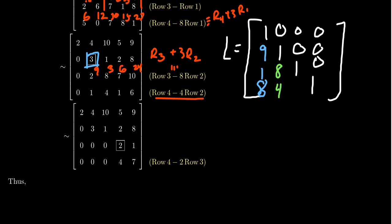Continuing row four minus four times row two: two times negative four is negative eight; eight plus one is negative seven; plus 11 gives four. Eight times negative four is negative 32; add six gives negative 26, and adding 33 gives one, then six plus one is seven. So we get the reduced form. The last step: move the pivot to the three-three position and eliminate the four below it. We take row four minus two times row three — since four divided by two is two as usual integers — putting a positive two in the four-three position of L.